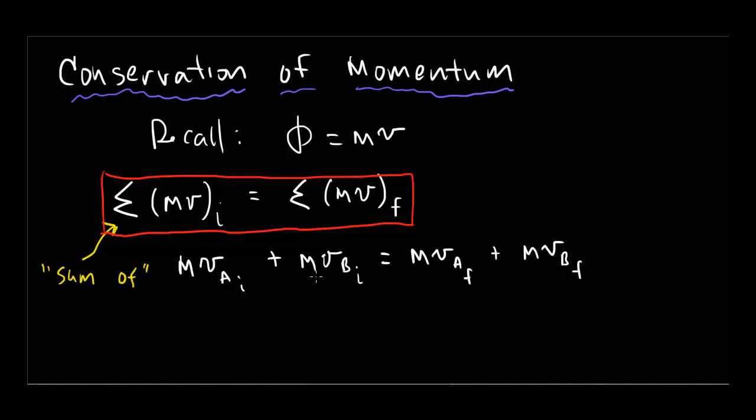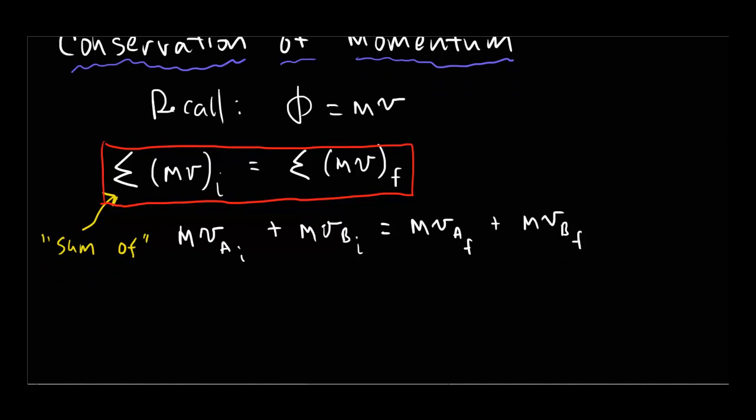And again, the idea is you can't really be losing momentum. The momentum has to be transferred. So again, this is similar. When we talked about energy, we said potential energy initial plus kinetic energy initial equals potential energy final plus kinetic energy final. So it's a similar kind of form.